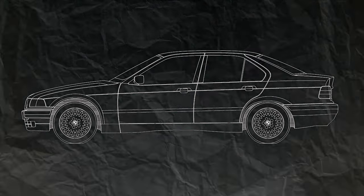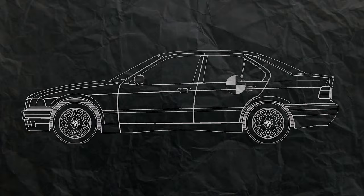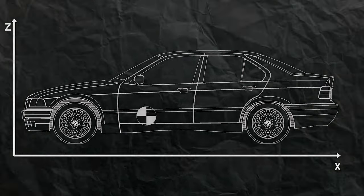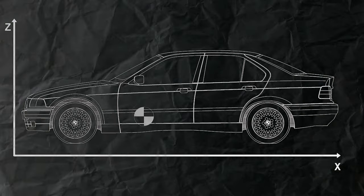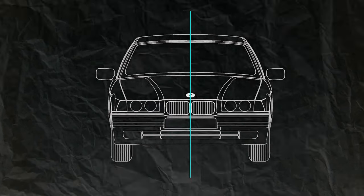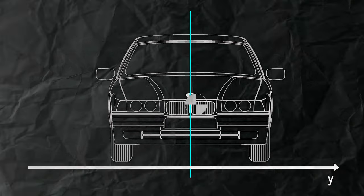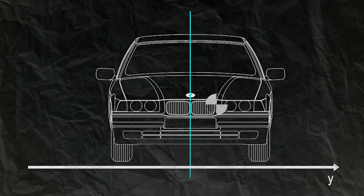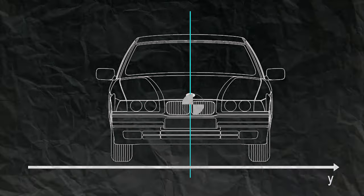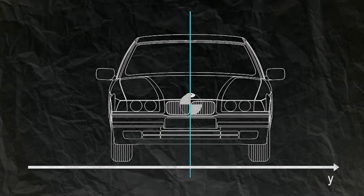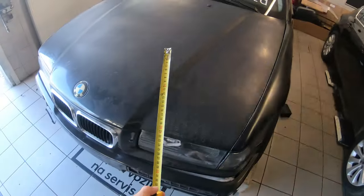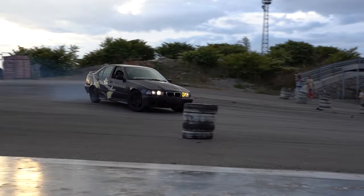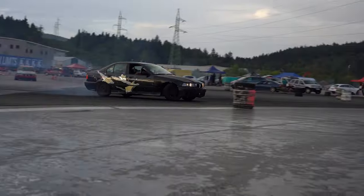I'll show you the process for determining the location of the CG in the longitudinal direction, or X, as well as the vertical Z direction. The process for the sideways or Y direction is the same as for X, but for most applications, if you're not doing anything super precise, it is completely fine to say that the Y coordinate is in the middle of the car. All of the examples will be done on my modified BMW E36 drift car.